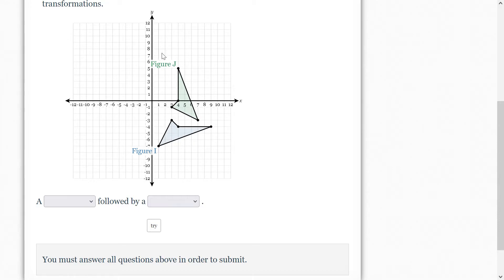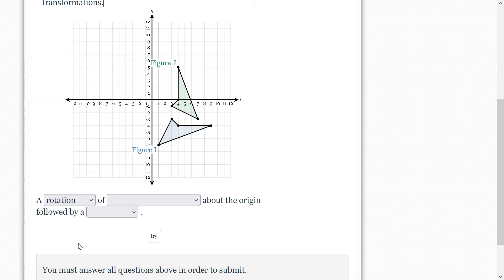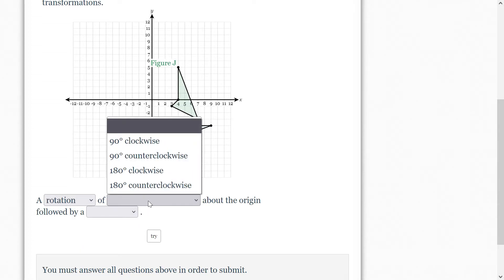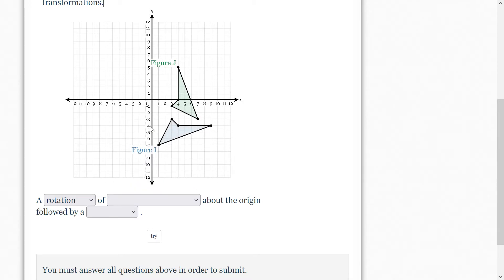So the first thing we're going to do here is think about how am I going to get this figure I onto figure J? And I think I would do probably a rotation. Now notice it doesn't give us positive or negatives, but clockwise or counterclockwise. So I want this figure I to rotate up here.